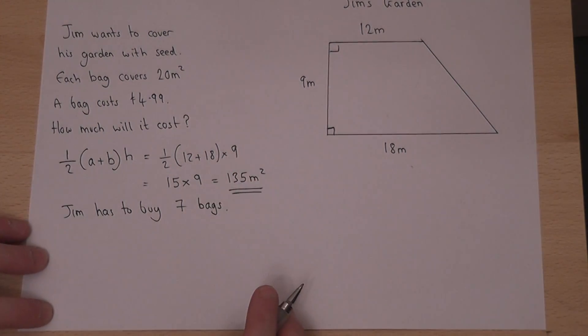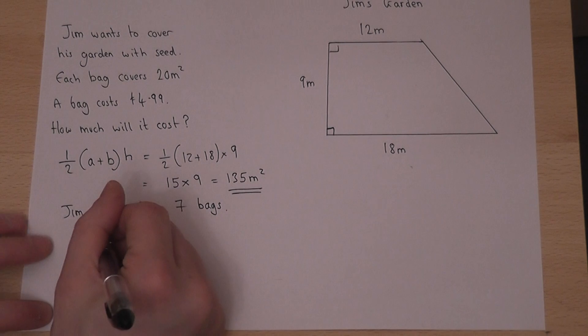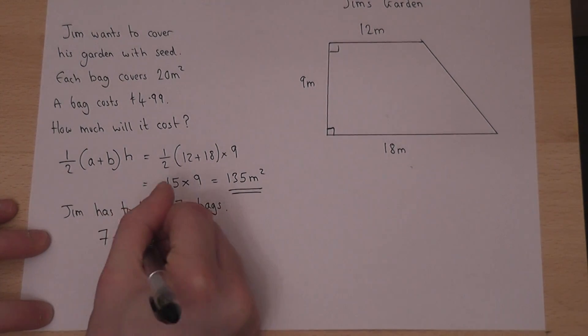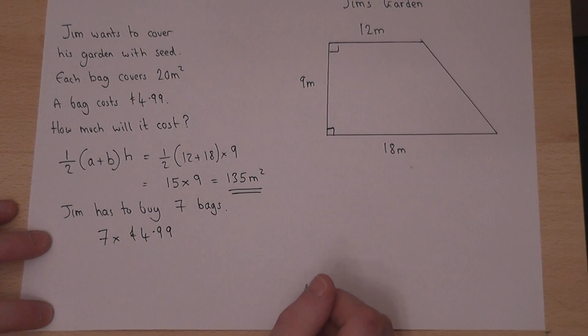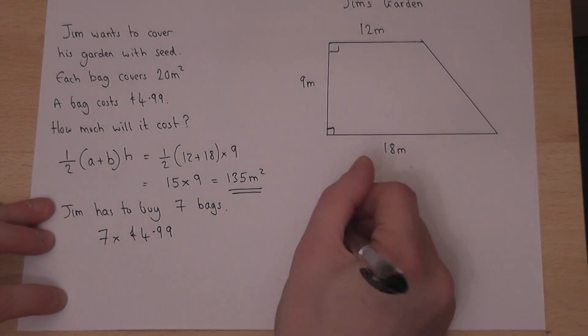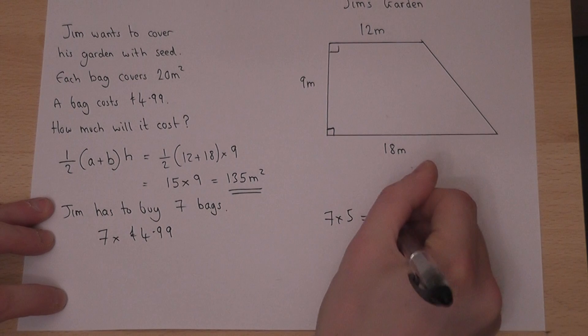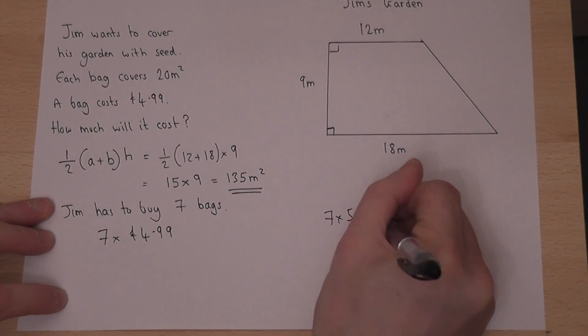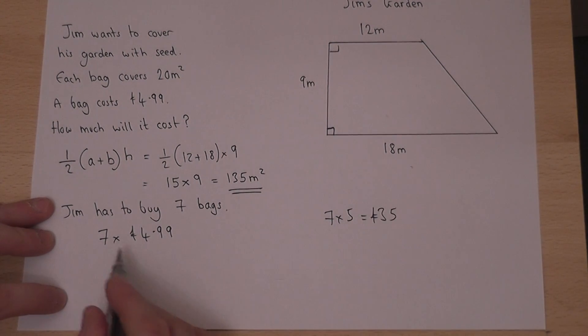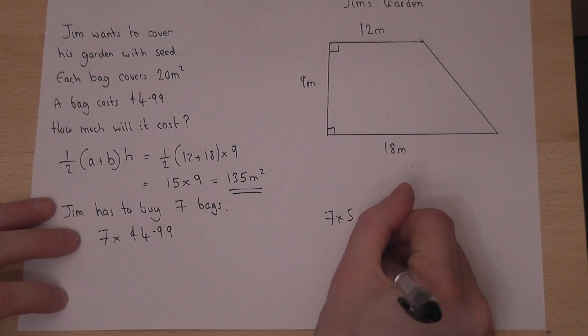To find the total cost we must evaluate seven lots of £4.99. Now the trick here is to do seven lots of five. Seven lots of five is £35, and then take away seven lots of one pence, which is seven pence.